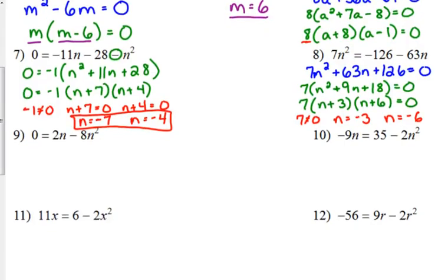Now let's look at example number 9. It is solved for zero. It is not in standard form. 0 is equal to 2n minus 8n squared. So two things can happen right here. We have a GCF, right? 2 and 8 have something in common and both of them have an n. So I'm going to put it in standard form at the same time. My quadratic term is negative, so I'm going to not only take out a 2n, but I'm going to take out a negative 2n.